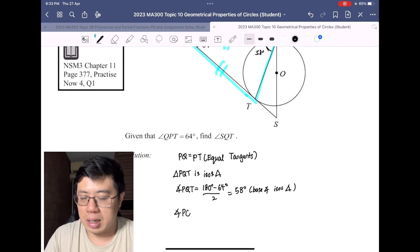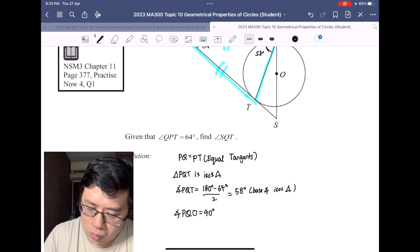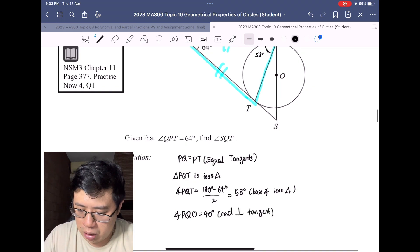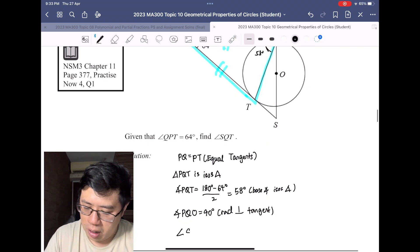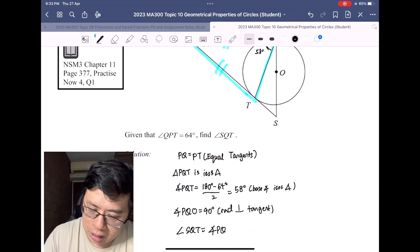We know that angle PQO is equal to 90 degrees. The reason here is we can just write down that radius is perpendicular to the tangent. Therefore, angle SQT will basically be angle PQO subtract angle PQT.